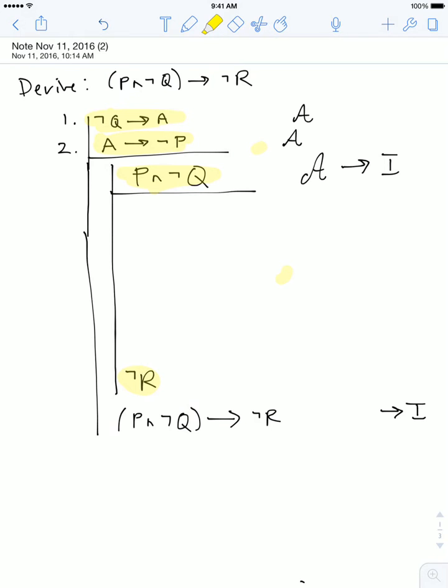Well, this doesn't have to be as puzzling as it seems, especially if we remember, especially if we remember that the sentence that we're trying to derive now, which is not R is the negation of R. And since it doesn't appear anywhere in my assumptions or sentences that I have access to, I should try to get it by introducing the negation.